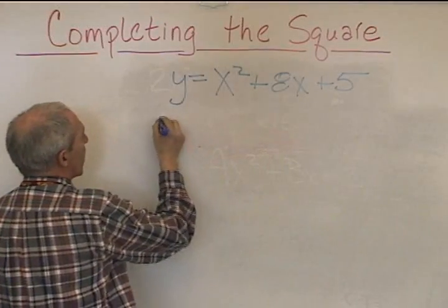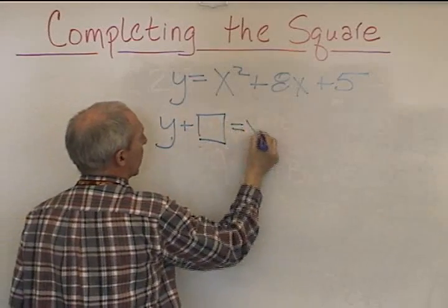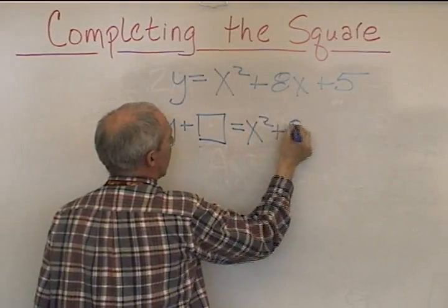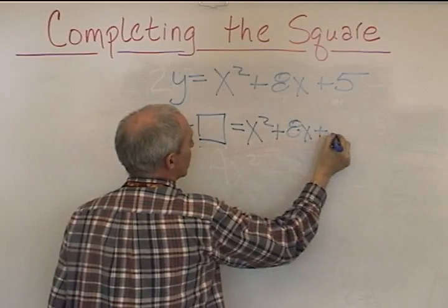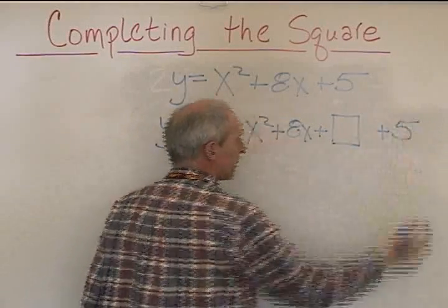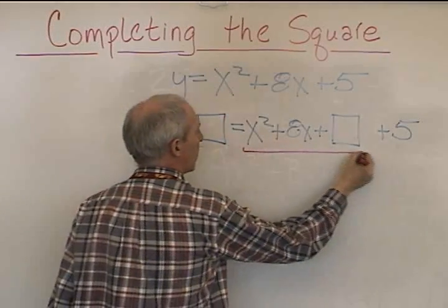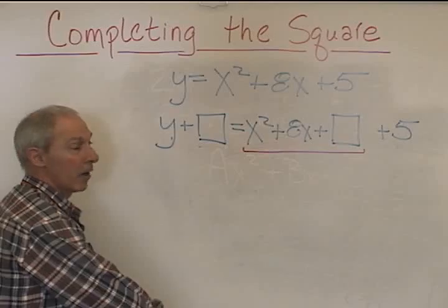This doesn't work by itself. We say y plus something in a box is equal to x squared plus 8x plus something in a box plus 5. What we're going to do is we're going to deal with this part right here. Turn it into a perfect square trinomial.